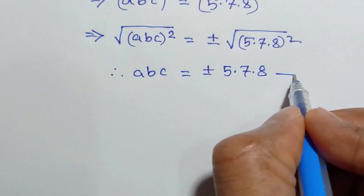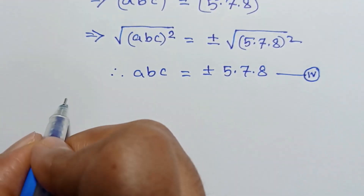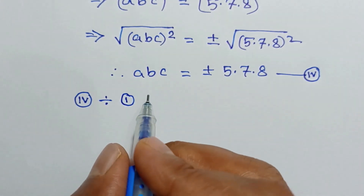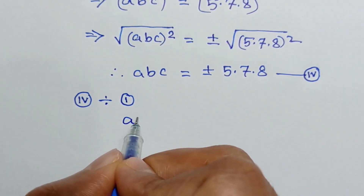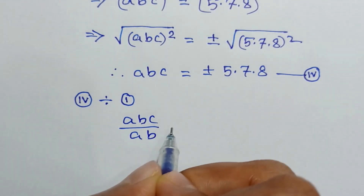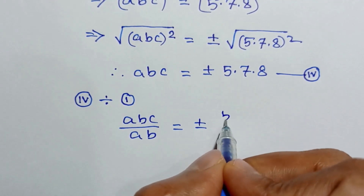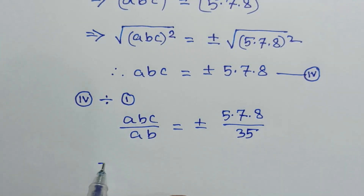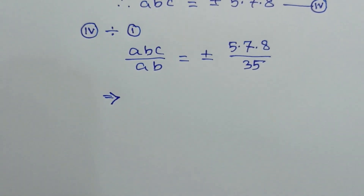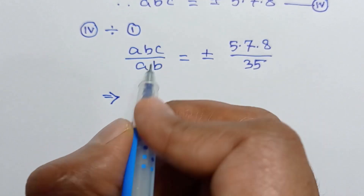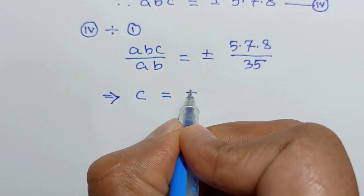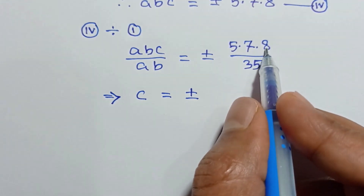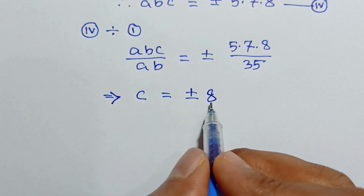Now if we divide equation number 4 by equation number 1, we have abc over ab is equal to plus or minus 5 times 7 times 8 over 35. The ab cancels out, leaving c. And since 5 times 7 equals 35, that cancels with the 35, leaving only 8. So the value of c is equal to plus or minus 8.